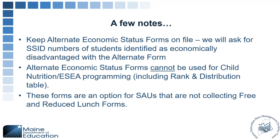A few quick notes: there needs to be a record of those alternate economic status forms — we'll be asking for the SSID numbers of students identified as economically disadvantaged with that form. Alternate economic status forms cannot be used for child nutrition or ESEA programming, including the ranking and distribution table. These forms are an option for SAUs not collecting free and reduced lunch forms, but as Paula said, you should collect them — you can send them to everyone as a blanket form.